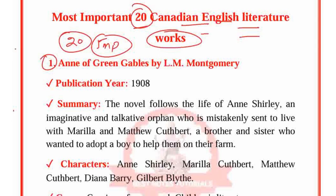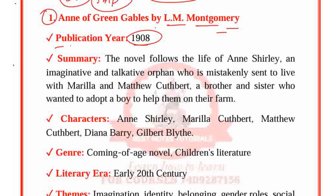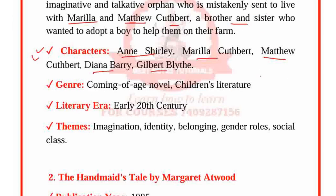The first work is Anne of Green Gables, written by L.M. Montgomery. The publication year is 1908. The novel follows the life of Anne Shirley, the main character — an imaginative and talkative orphan who is mistakenly sent to live with Marilla and Matthew Cuthbert, a brother and sister who wanted to adopt a boy to help them on their farm. The characters are Anne Shirley, Marilla Cuthbert, Matthew Cuthbert, Diana Barry and Gilbert Blythe.